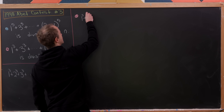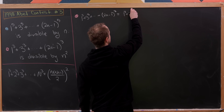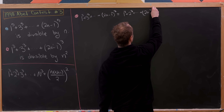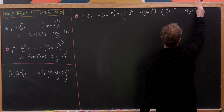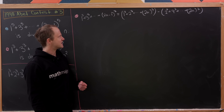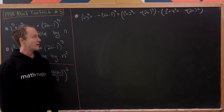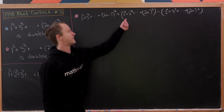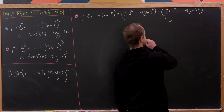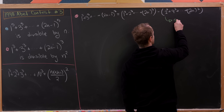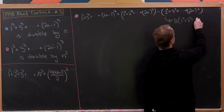So we write: 1 cubed plus 3 cubed ending at 2n minus 1 cubed equals 1 cubed plus 2 cubed plus 3 cubed ending at 2n cubed, minus 2 cubed plus 4 cubed ending at 2n cubed. For the even terms, there's a factor of 2 cubed — that is, 8 — attached to all of them, so we factor out 8 and are left with 1 cubed plus 2 cubed ending at n cubed.